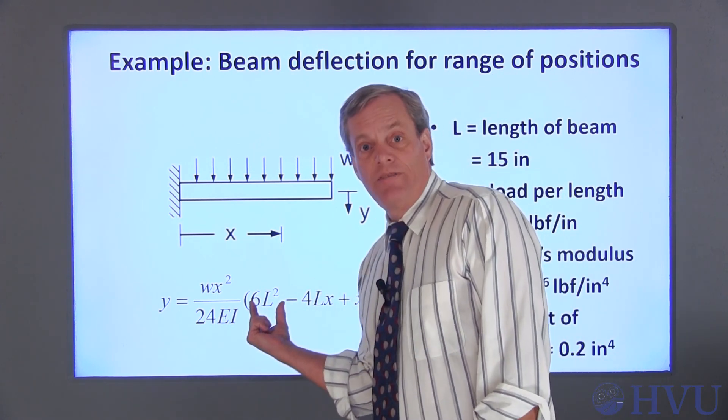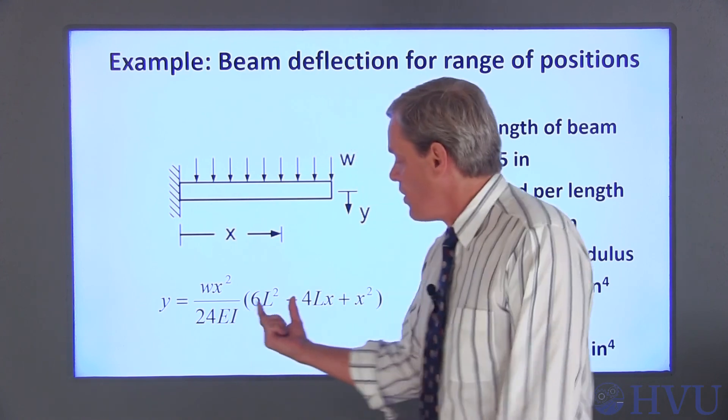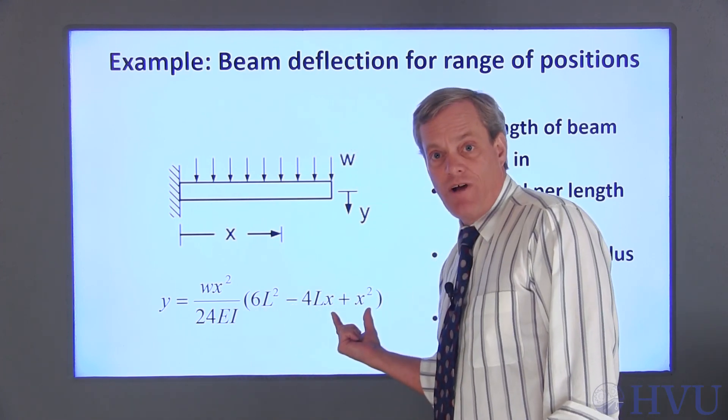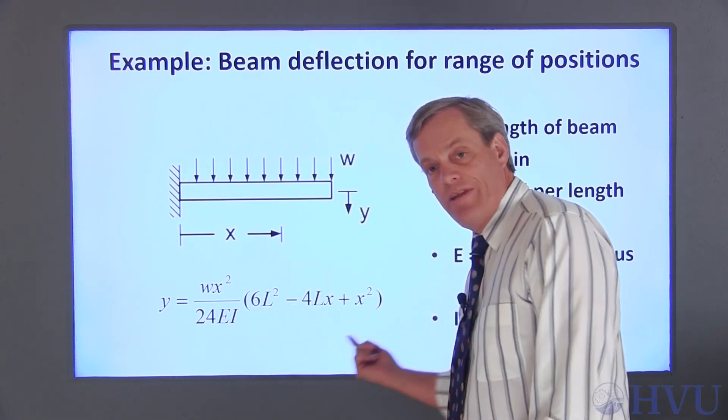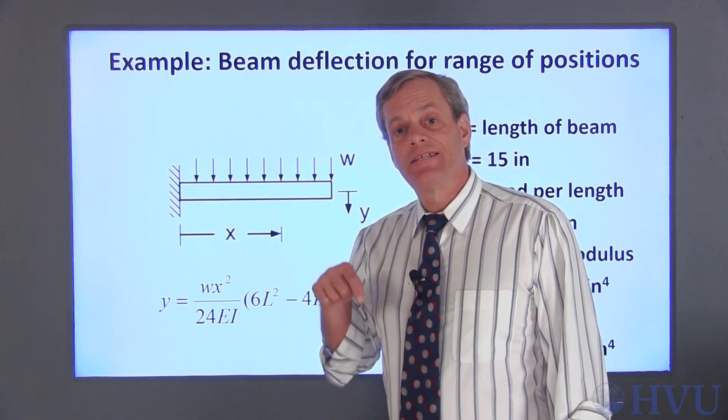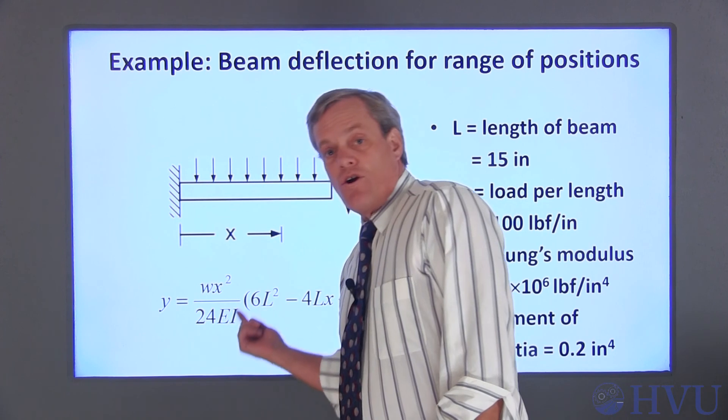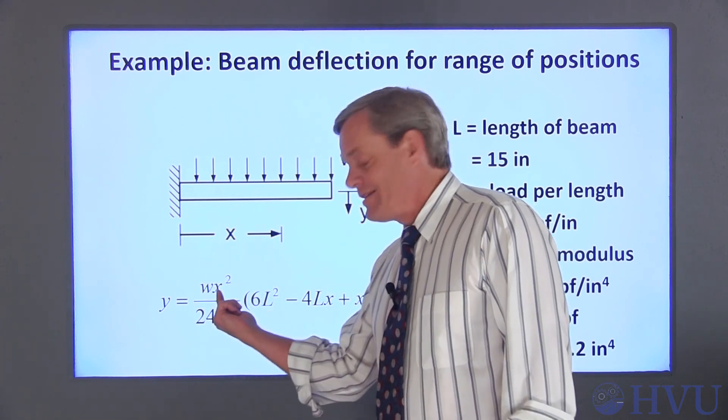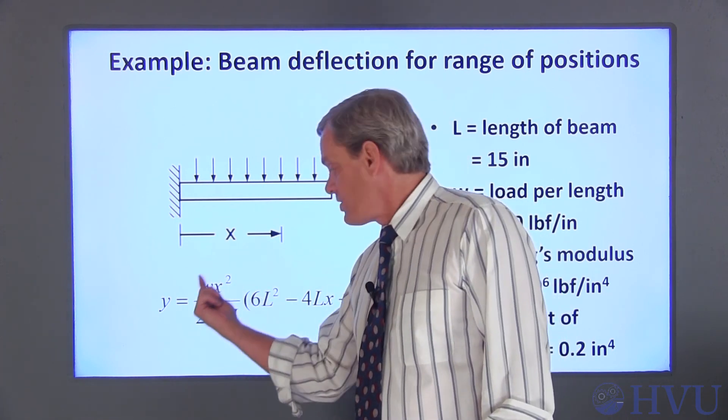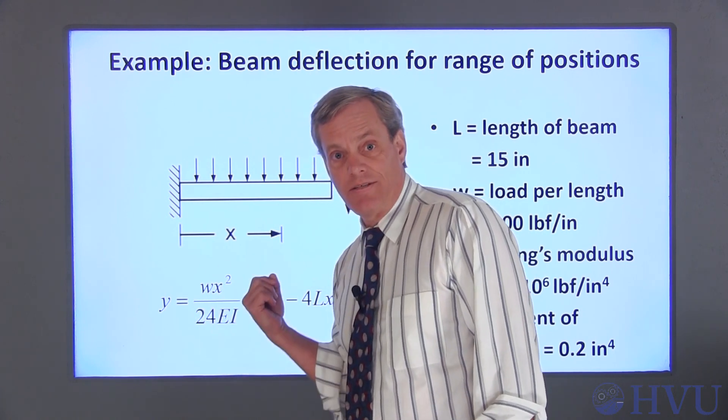The term 6 times L squared is just a scalar. When we do these additions and subtractions, the term within the parentheses is an array that's the same size as the X array. This term is also a scalar times an array that's the same size as X, so this array will also be the same size as X.